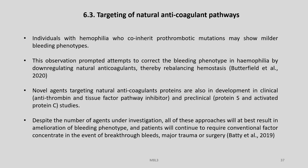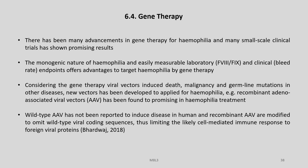Targeting of natural anticoagulant pathways: individuals with haemophilia who co-inherit pro-thrombotic mutations may show milder bleeding phenotypes. This observation prompted attempts to correct the bleeding phenotype in haemophilia by down-regulating natural anticoagulants, thereby rebalancing haemostasis. Novel agents targeting natural anticoagulant proteins are also in development in clinical and preclinical studies. Despite the number of agents under investigation, all of these approaches will at best result in amelioration of the bleeding phenotype, and patients will continue to require conventional factor concentrate in the event of breakthrough bleeds, major trauma, or surgery.